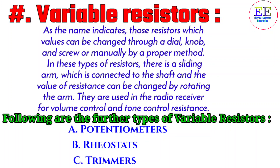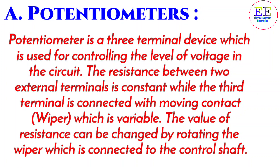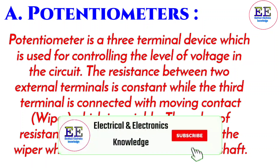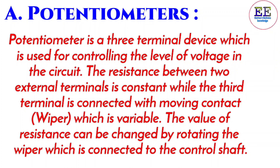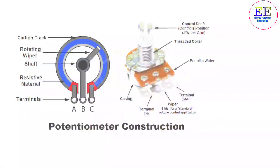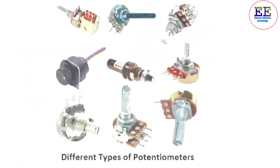The further types of variable resistors are: A, potentiometers; B, rheostats; C, trimmers. A potentiometer is a three-terminal device used for controlling the level of voltage in a circuit. The resistance between two external terminals is constant, while the third terminal is connected to a moving contact which is variable. The value of resistance can be changed by rotating the wiper connected to the control shaft.